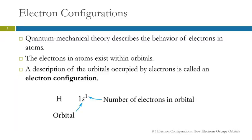Quantum mechanics describes the behavior of electrons in atoms. You just learned that electrons exist within orbitals, these wave functions. An electron configuration is a shorthand description of which orbitals in an atom are actually occupied by electrons. Hydrogen is very simple — it only has one electron. The electron configuration for hydrogen is 1s1: the 1 is the principal quantum number n equals 1, s comes from l equals 0, and the superscript 1 says how many electrons are in that orbital, which is 1.